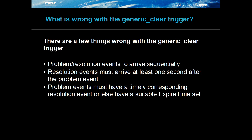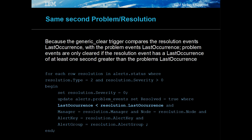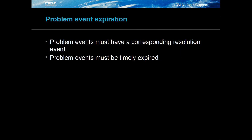There are a few known issues with the generic clear trigger. Problem events must arrive before the resolution event. Resolution events must have a last occurrence greater than the problem event. Problem and resolution events should not be allowed to persist in the object server. Because resolution events are automatically cleared, the problem event must arrive before the resolution event. The resolution event must be newer than the problem event by one second for the event to be generic cleared. Problem events must have a corresponding resolution event and be timely expired to reduce the load on the generic clear trigger.